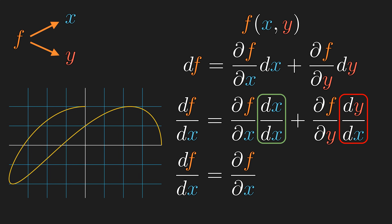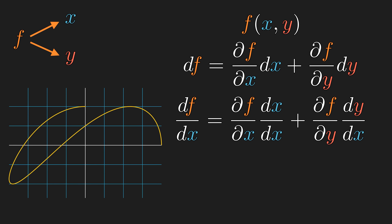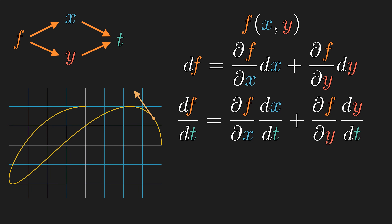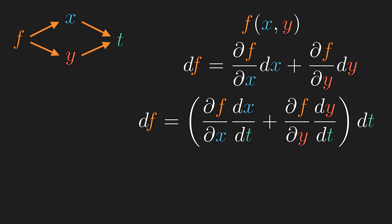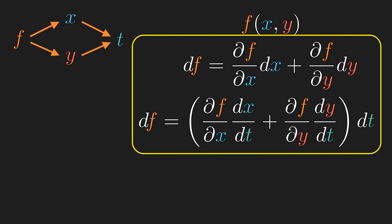Suppose there is a time-parameterized curve in two-dimensional space. Then x and y are each functions of t, and the time derivatives of x and y represent the velocity vector at a given point. How much the function f changes with respect to time is df/dt. Multiplying both sides by dt gives two equalities that are different versions of the gradient theorem, or the fundamental theorem of line integrals. Convention P plays really nicely with the notion of differentials and line integrals.